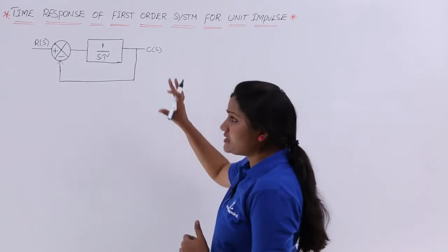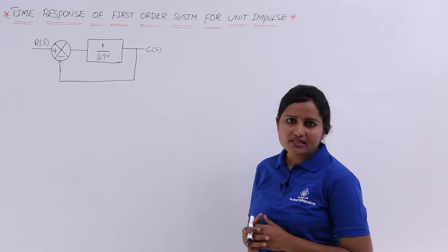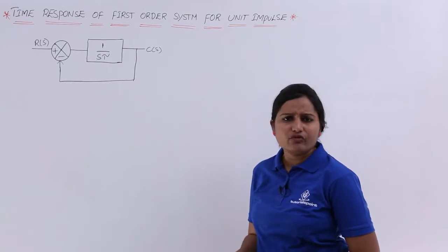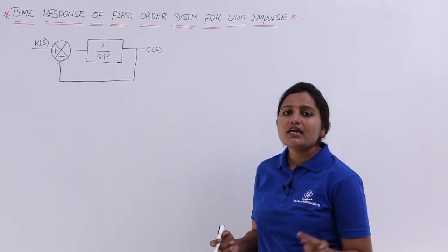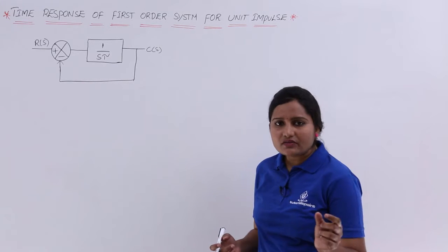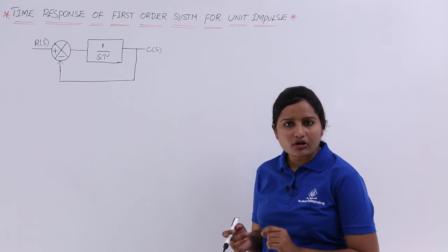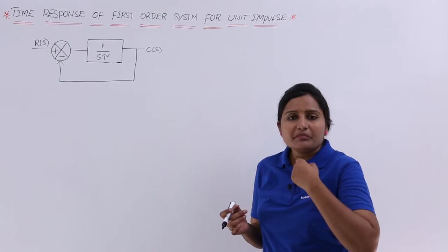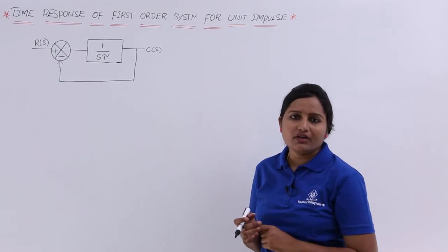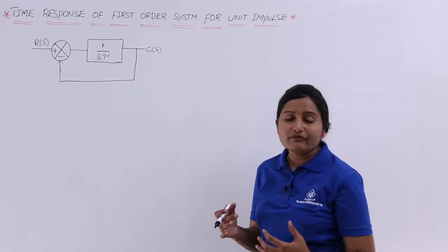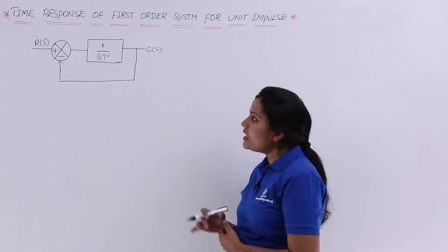This is the basic first order system. Generally, what is meant by a first order system means: in the transfer function denominator polynomial, if the maximum power of s is equivalent to 1, then we can say that is a first order system.